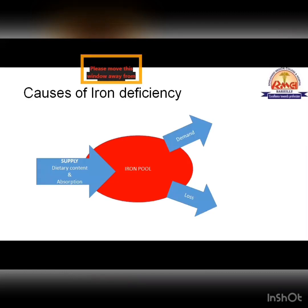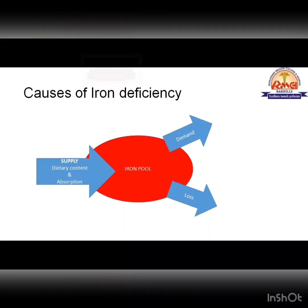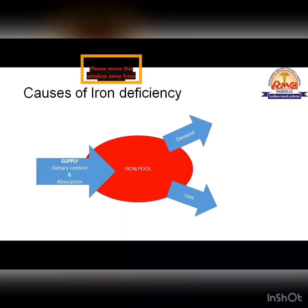Deficiency of any nutritional element — iron, calcium, vitamin D, anything — occurs due to a mismatch between supply and demand. If supply decreases, demand increases, or losses increase, then there will be a decrease in that nutrient.